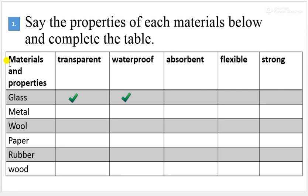The first one, say the properties of each materials below and complete the table. First one is materials and properties. Glass, metal, wool, paper, rubber, wood. The properties are transparent, waterproof.